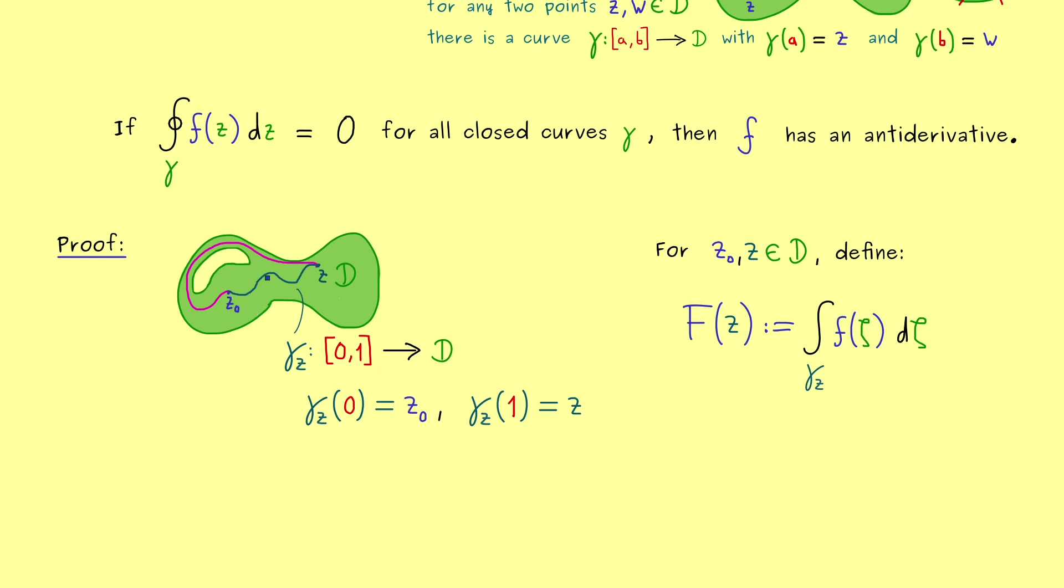Namely, you can combine a closed curve out of both curves here. And there we know, by assumption, the integral along the closed curve should be 0. So maybe, let's write the details down, let's call this curve gamma tilde.